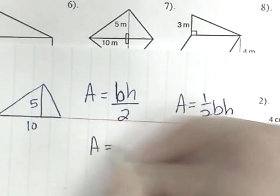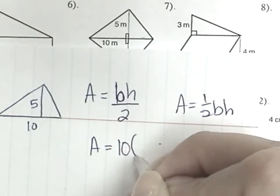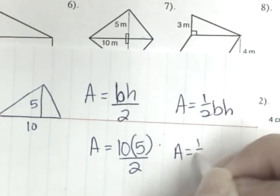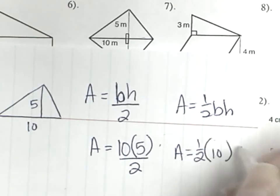What's my base? Ten, thank you. What's my height? Five. And we're going to divide that by two. Here we have half, my base is ten, my height is five.